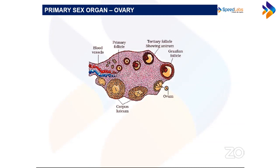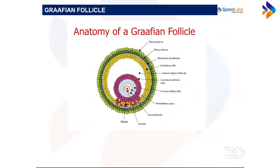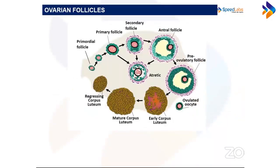We continue from the sectional view of the ovary showing follicles and begin the process of folliculogenesis. Folliculogenesis is the process of formation of follicles. Don't confuse it with oogenesis — oogenesis describes the production of the oocyte, while folliculogenesis describes the formation of all the different layers around the oocyte.